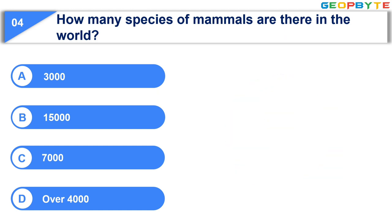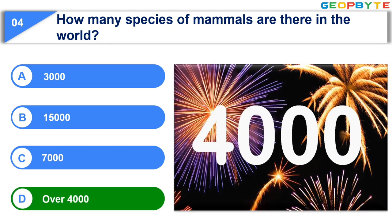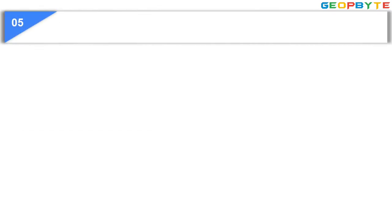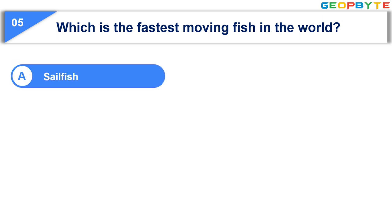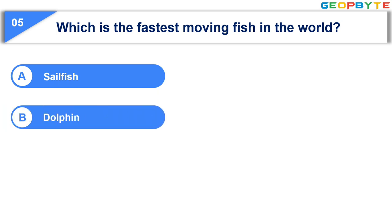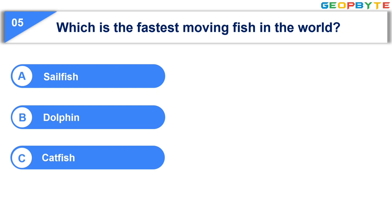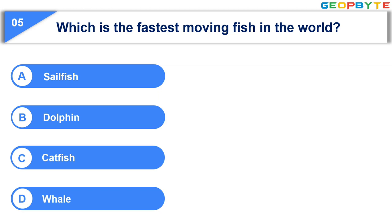Your time is up and the correct answer is Option D: Over 4,000. Moving to the fifth question: Which is the fastest moving fish in the world? Option A: Sailfish. Option B: Dolphin. Option C: Catfish. Option D: Whale. Your time starts now!